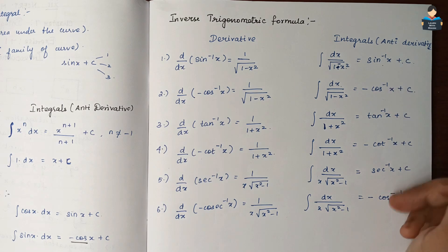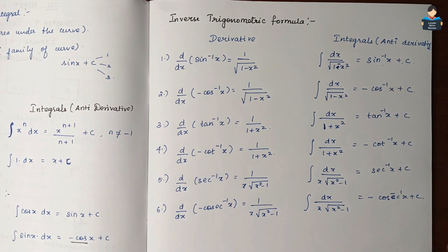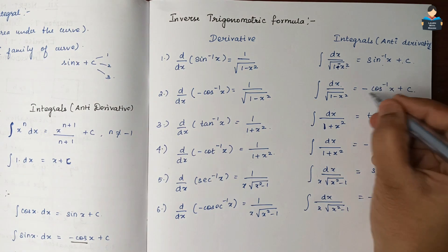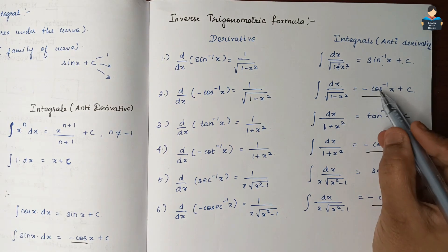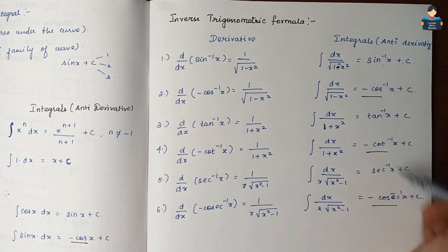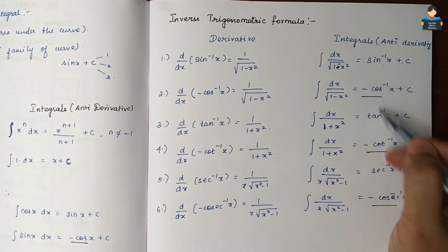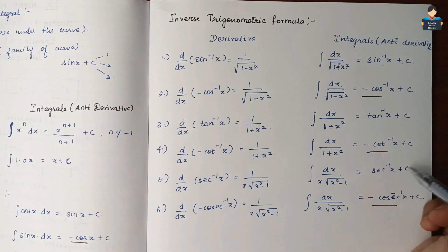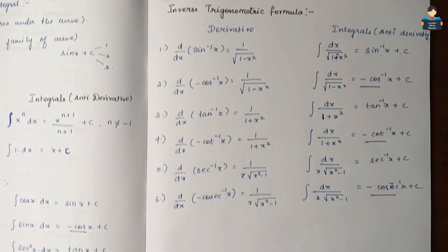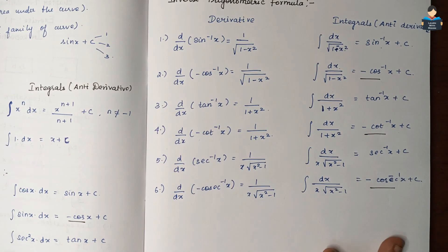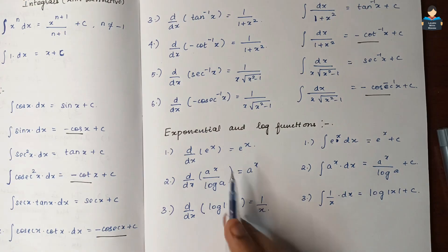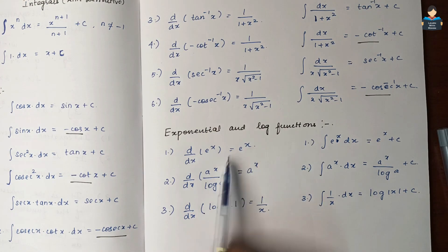Continuing inverse trig: we also get cos inverse, sec inverse, and cosec inverse formulas, each with a constant C. These give us the complete set of inverse trigonometric integration formulas.